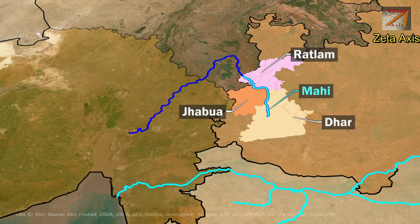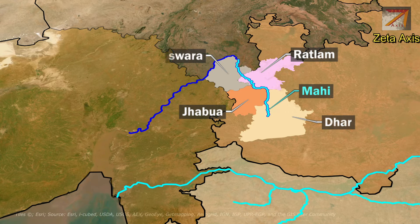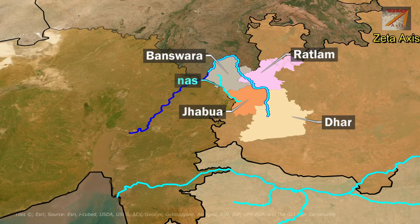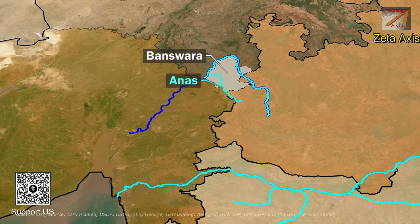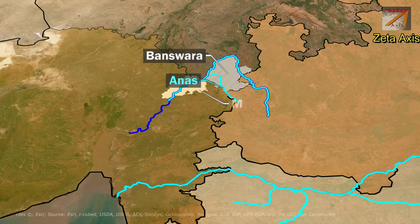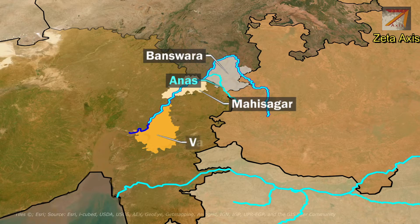The Mahi River then enters Rajasthan in Banswara district. Within Banswara district, Anas River meets Mahi River. Anas River originates in Jhabua district of Madhya Pradesh. The Mahi River enters Gujarat in Mahisagar district and finally drains into the Gulf of Khambhat in Vadodara district.